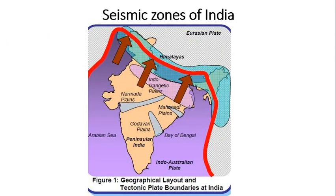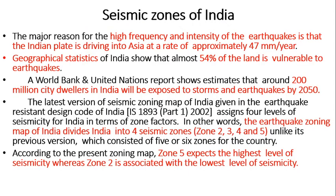You can see the diagram showing the red line indicating the plate boundary where the Eurasian plate and Indo-Australian plate collide, resulting in very high mountain ranges — the Himalayas. India has a very high frequency and intensity of earthquakes due to tectonic plate movement activity of 47 millimeters per year. Almost 54 to 60 percent of the Indian subcontinent is susceptible to earthquake damage. A World Bank and United Nations report estimates that 200 million city dwellers in India will experience very high magnitude storms and earthquakes by 2050.